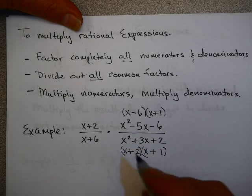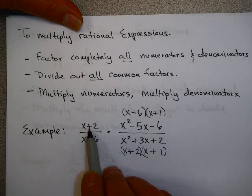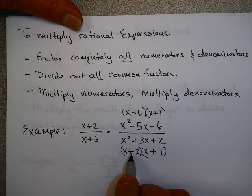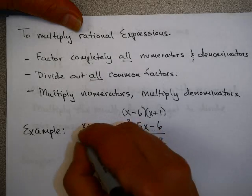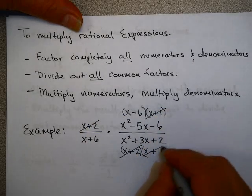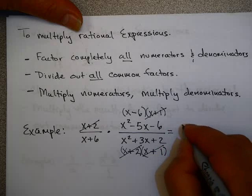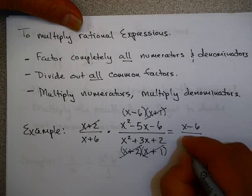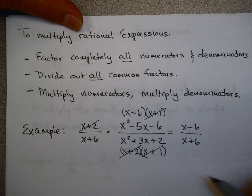Once I have it written like this, x minus 6 and x plus 1 are terms, and x plus 2 and x plus 1 are terms here. So this x plus 2 and this x plus 2 can divide out, and this x plus 1 and this x plus 1 can divide out. What's left? x minus 6 over x plus 6. Remember from the last section: don't cancel these x's or these 6's.